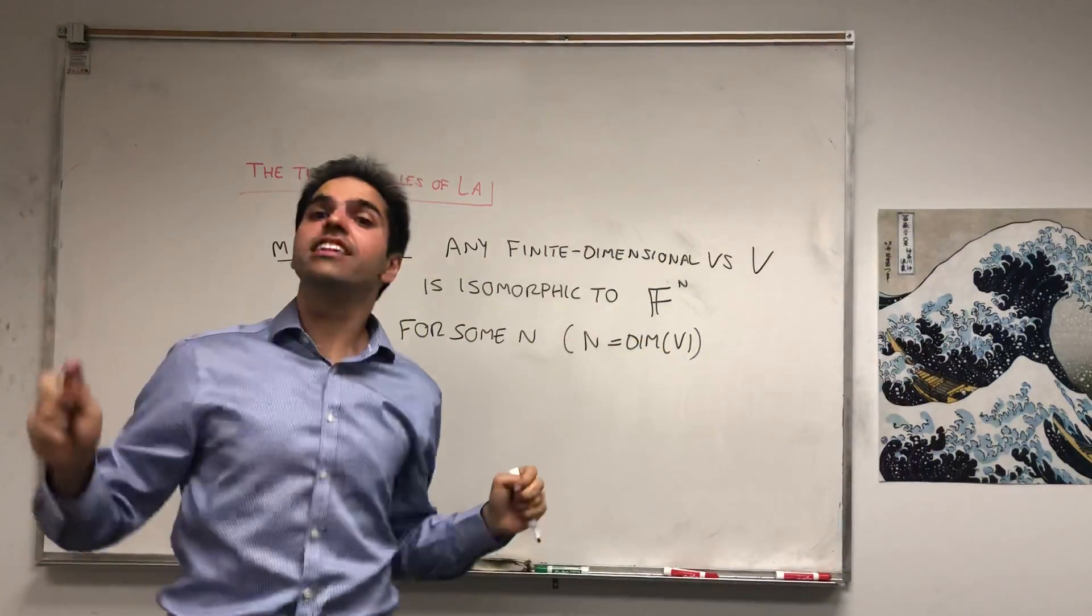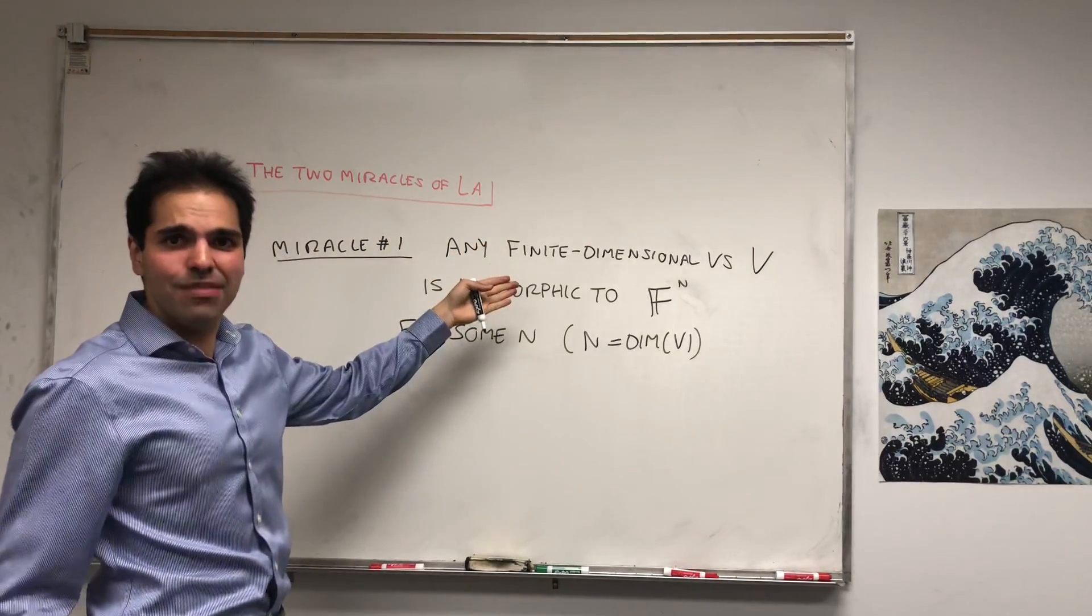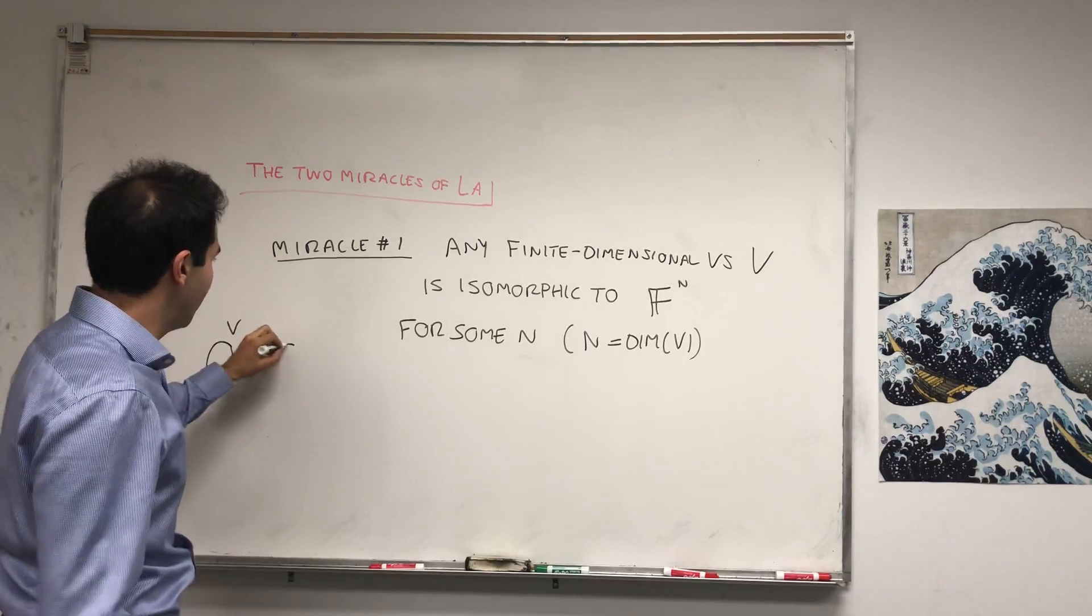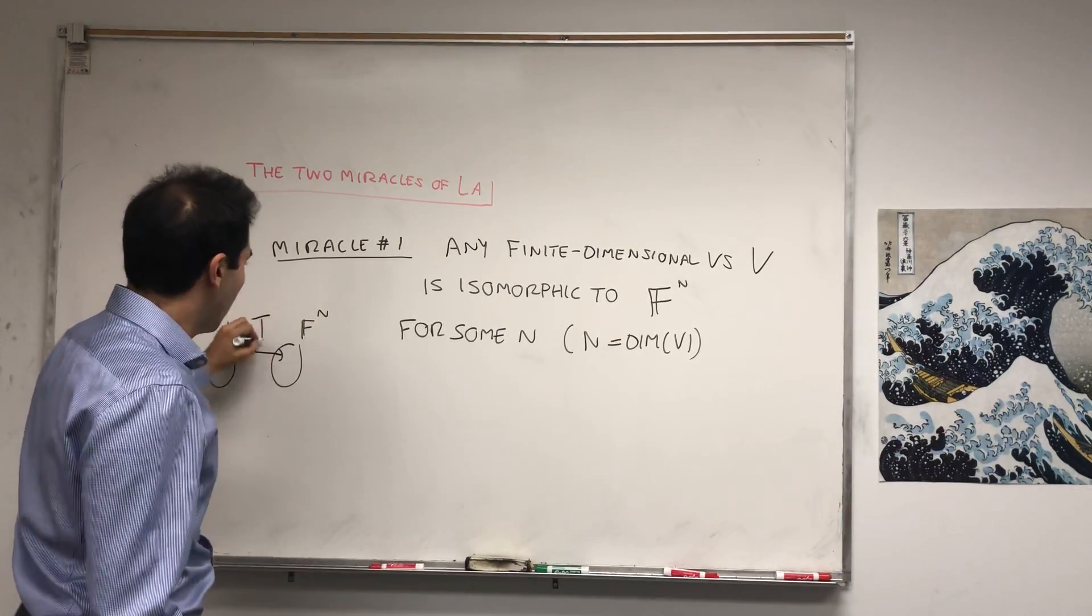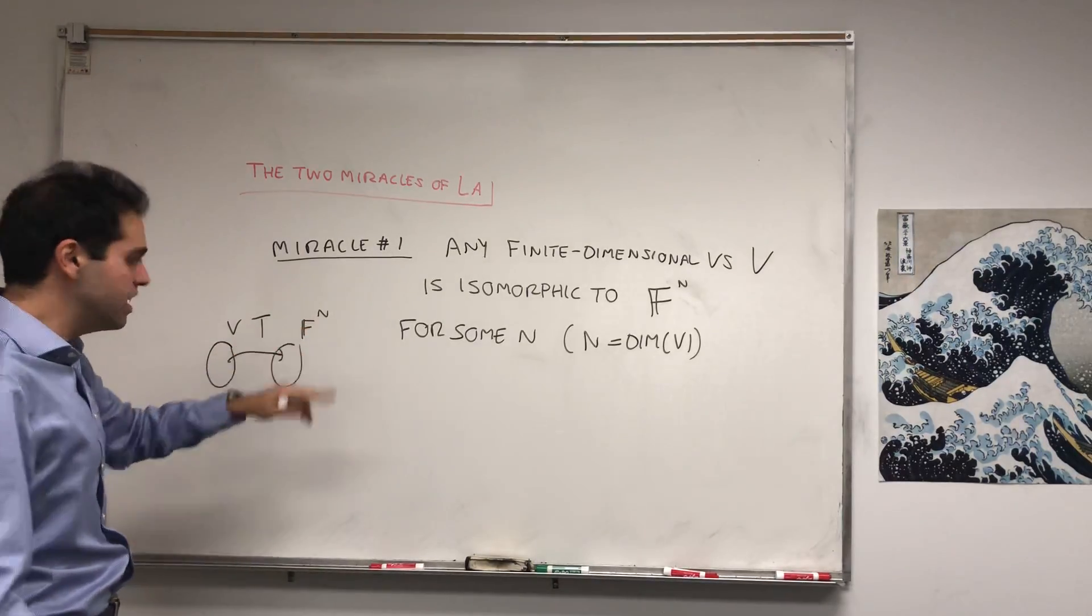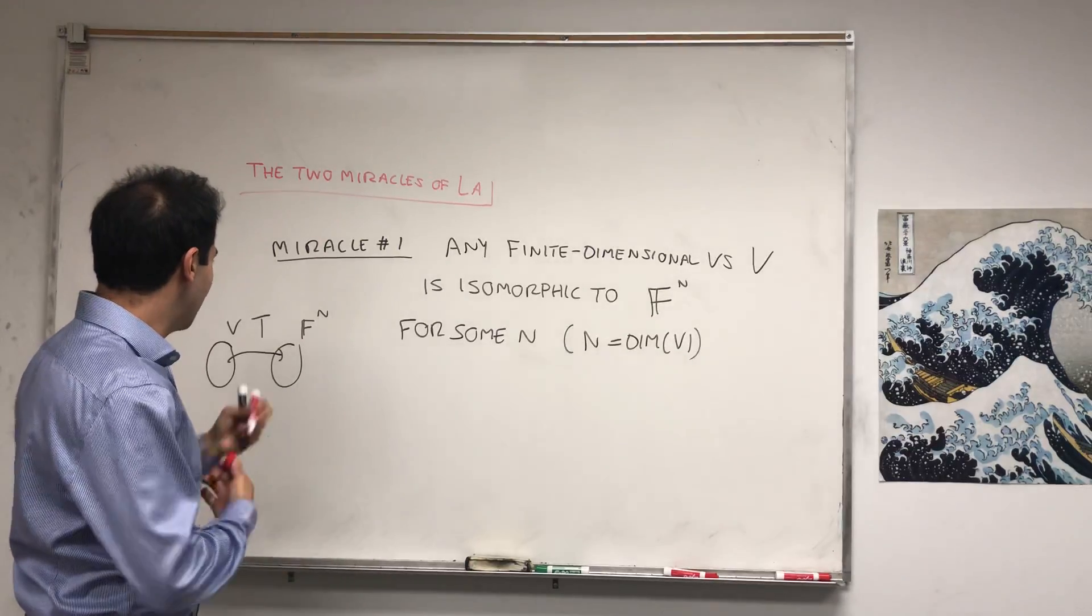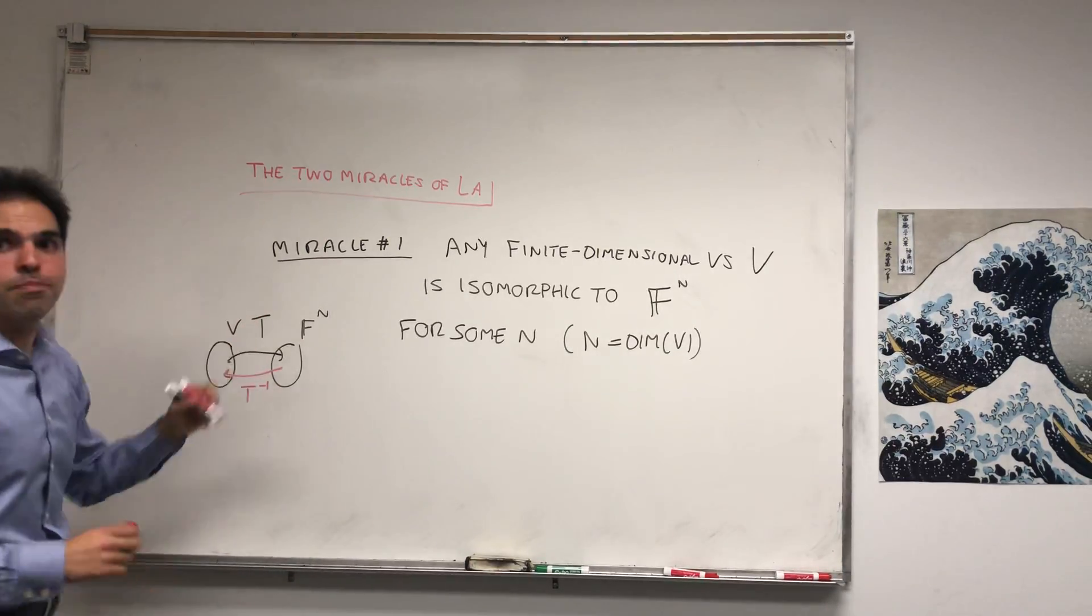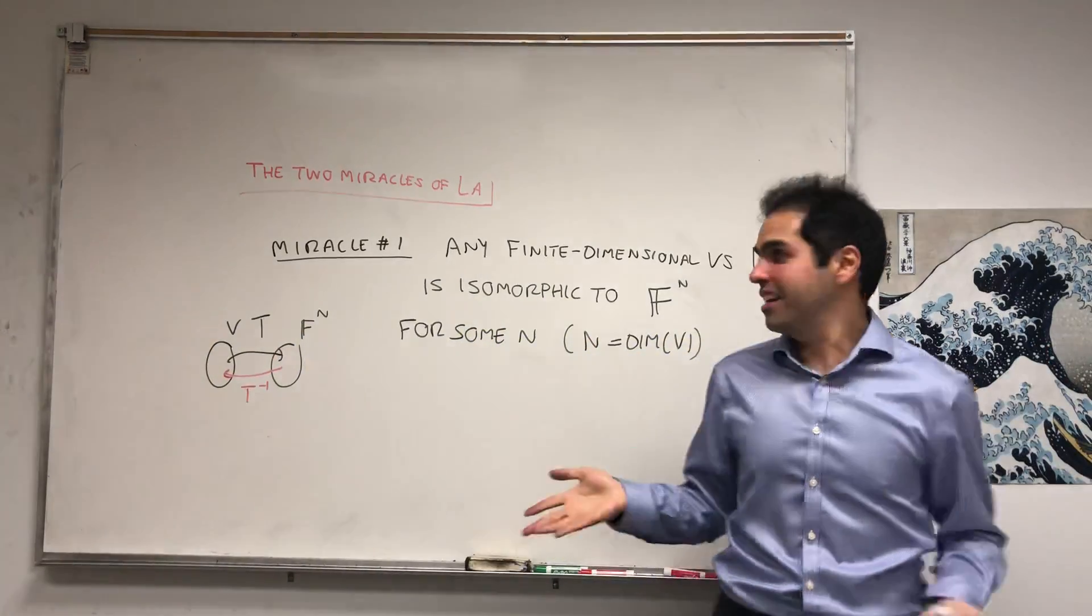In other words, what this really means is there's a linear transformation from V to F^N that is one-to-one and onto, or in other words, there's an invertible linear transformation from V to F^N. In other words, there's a very easy way of getting back and forth from V to F^N, which is very nice.